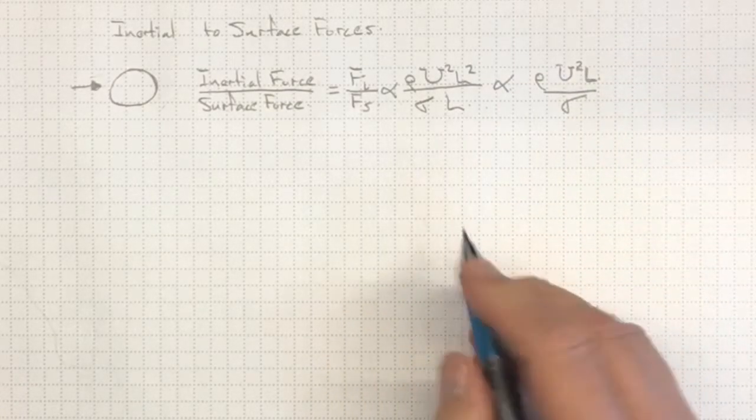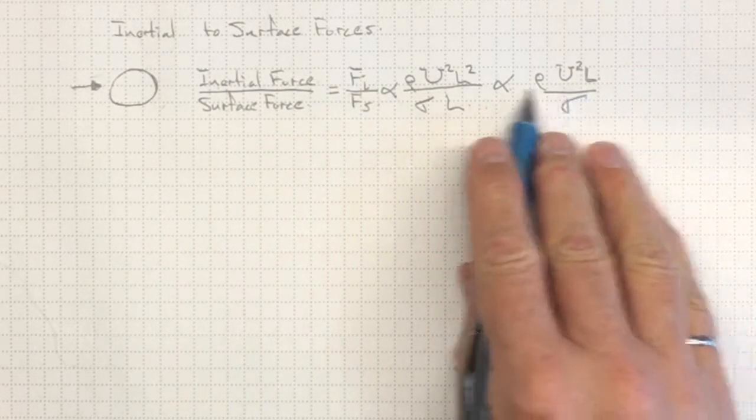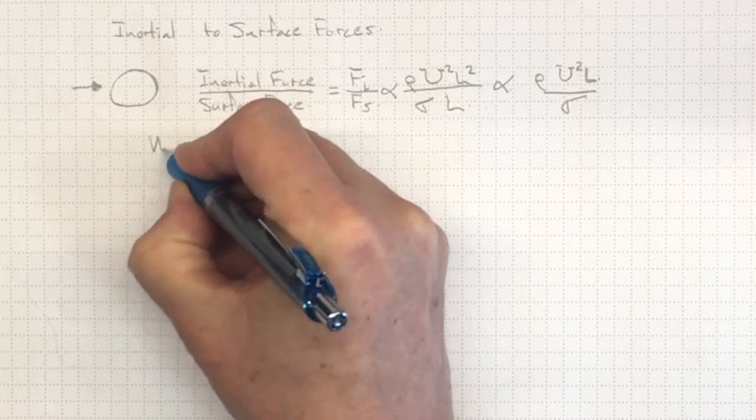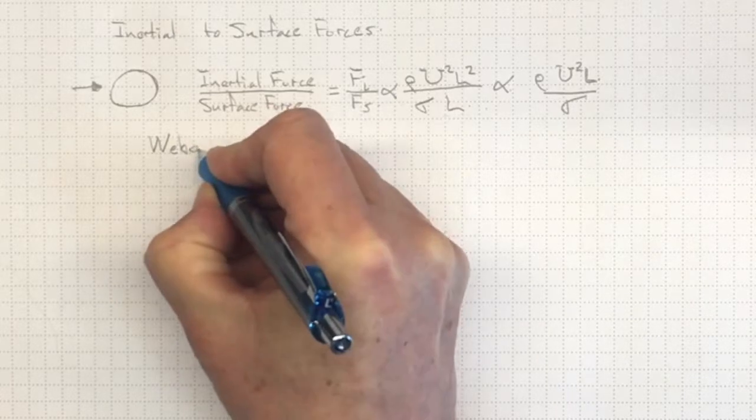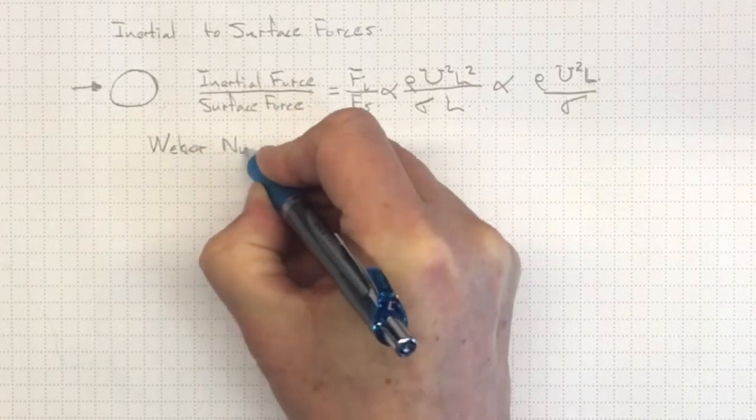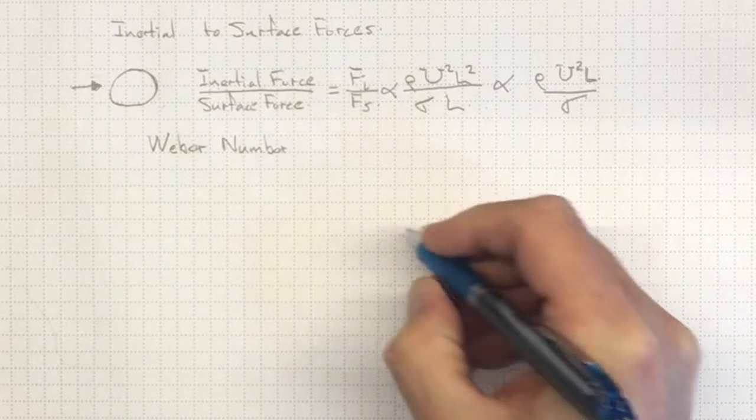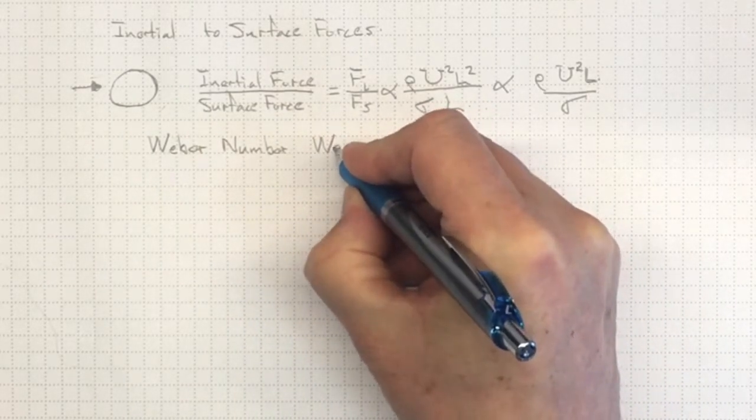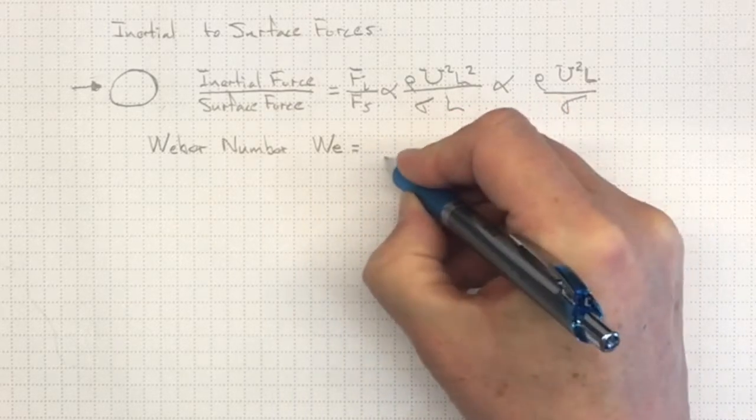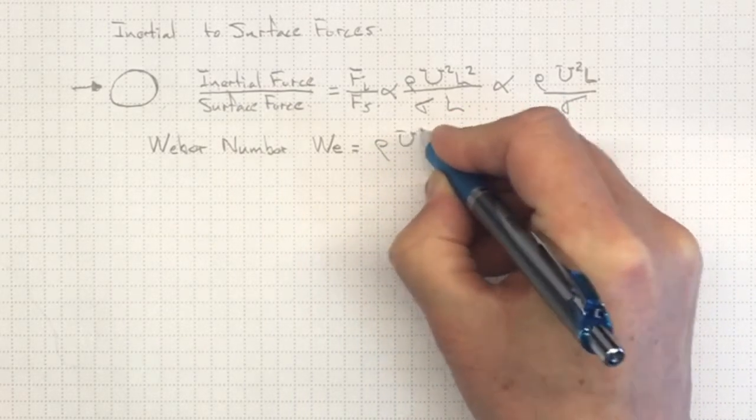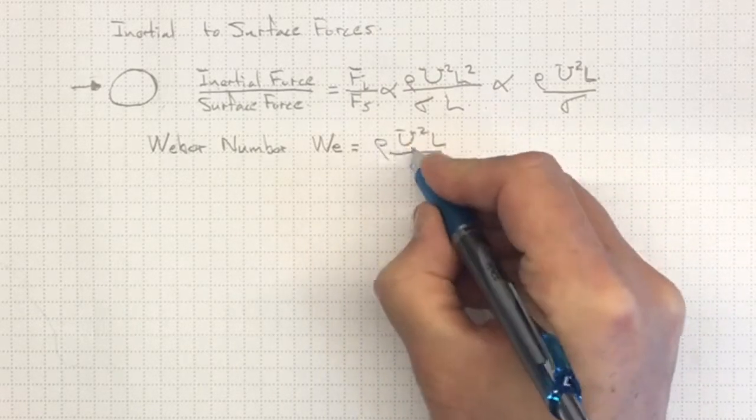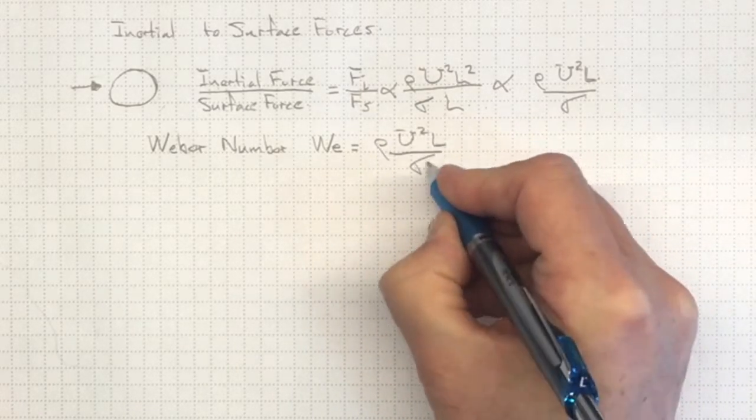And when we notice this, we can say that's a nice dimensionless number. And that was first picked up by Moritz Weber, and he got the number named after him as the Weber number. And that's usually expressed as We, and it's equal to rho u squared l over sigma. Density, velocity squared, length over surface tension.